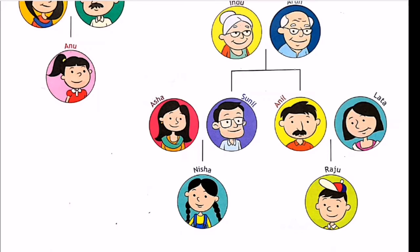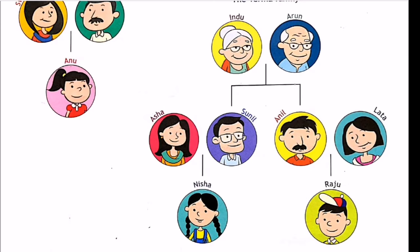Arun and Indu are the parents of Anil and Sunil Barma. Mr. Arun and Mrs. Indu are the father and mother of Mr. Anil and Mr. Sunil — so Sunil and Anil are brothers. Arun and Indu are Nisha and Raju's grandparents. Nisha and Raju are the grandchildren of Indu and Arun, and the grandparents tell the children many stories.